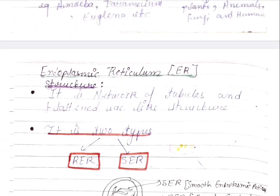Examples of unicellular organisms include amoeba, paramecium, and euglena. Multicellular organisms include plants, animals, human beings, and fungi.